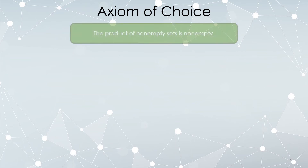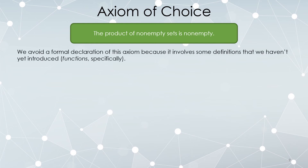Next, the axiom of choice: the product of non-empty sets is not empty. We'll avoid formally writing it out because it involves functions between sets, which we haven't introduced yet. But remember, a product set is all possible ordered pairs. Suppose I have two non-empty sets A and B — is it possible to construct ordered pairs? Intuitively, yes: choose an element of A and an element of B and make an ordered pair. That's why this is called the axiom of choice. It turns out you can't actually prove that's possible without introducing a new axiom. So for any two non-empty sets A and B, their product is also non-empty.